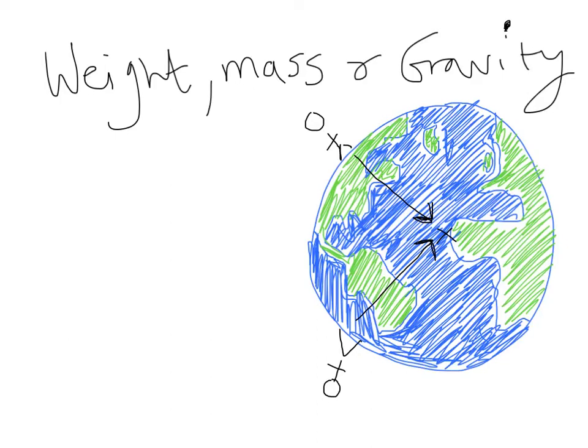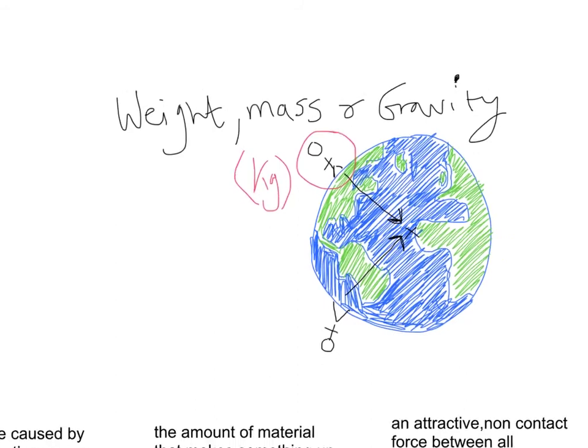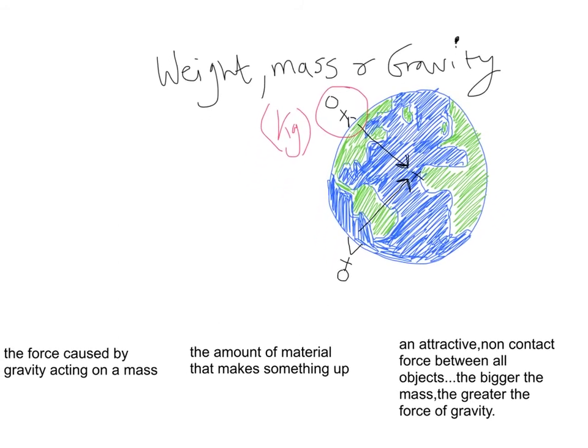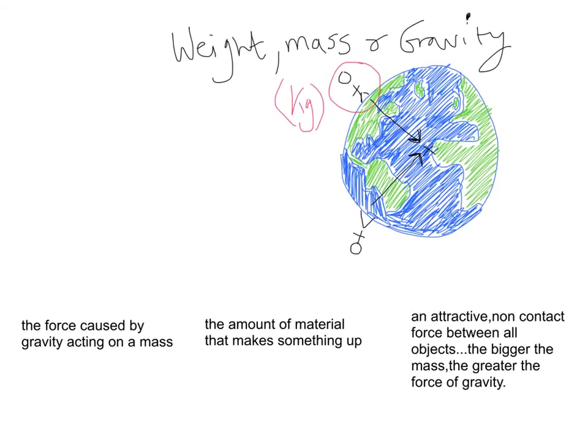Now, each of these people, so if we just take this guy here, this guy here has a mass. Mass is the amount of material that makes an object up. We all have mass, and it's measured in kilograms. So, if I zoom this out a little bit, we should have the definitions just below. So, mass is the amount of material that makes something up.